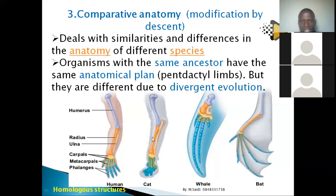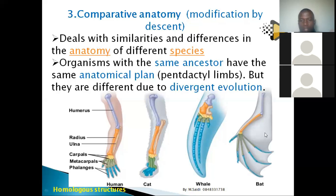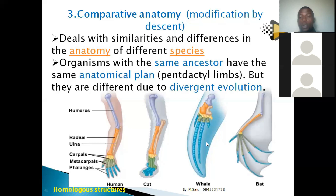For example, a cat's limb is modified to capture prey, a whale's is modified for swimming, and a bat's for flying. Even humans adapt when in water or attempting to move through air, mimicking the locomotion of other organisms.